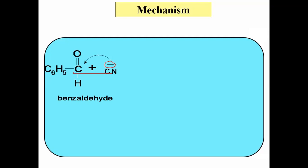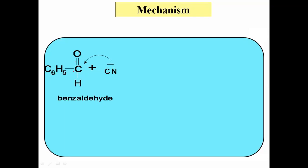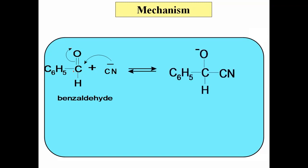To maintain the valency of this carbon, the pi bond undergoes breaking. The electron pair goes towards oxygen, which acquires a negative charge. We get the intermediate alkoxide ion. This oxygen has a negative charge. This is just the attack of CN⁻ nucleophile on benzaldehyde, and we get the corresponding intermediate, which is nothing but the alkoxide ion.